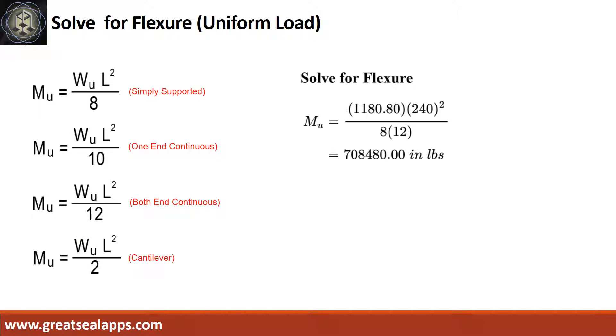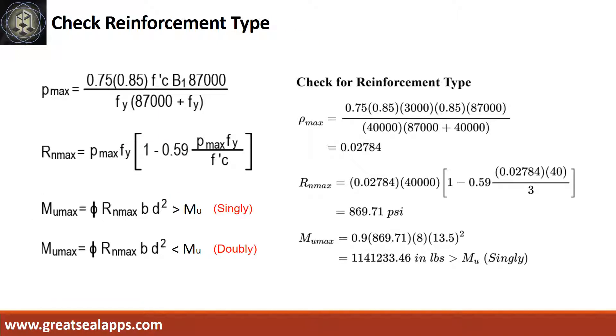Given factored load equals 1180.8 pounds per foot, L equals 20 feet. The maximum moment is 708,480 inch pounds. The ρ max from the given design criteria is 0.02784.